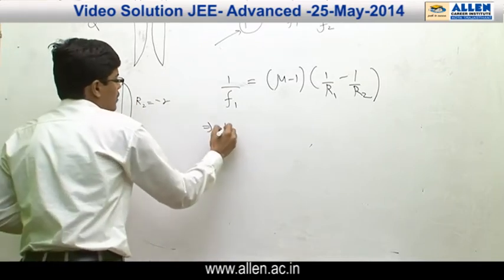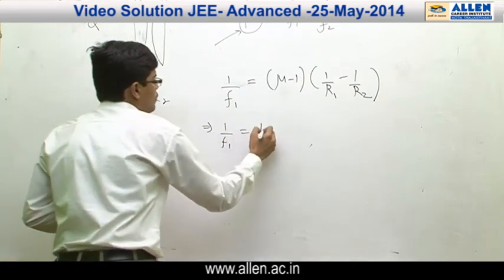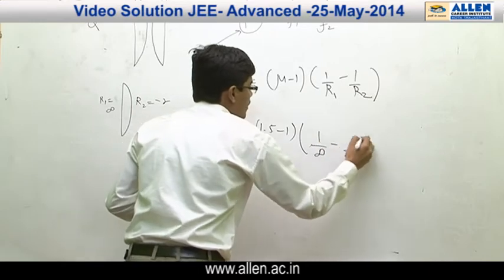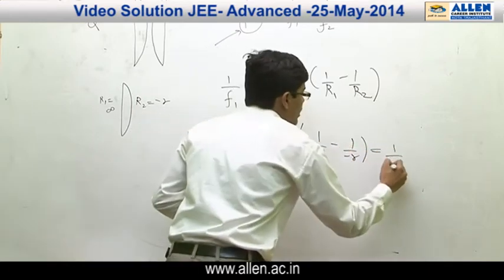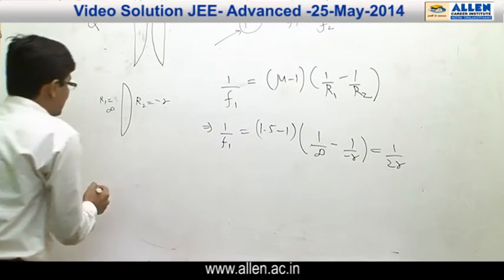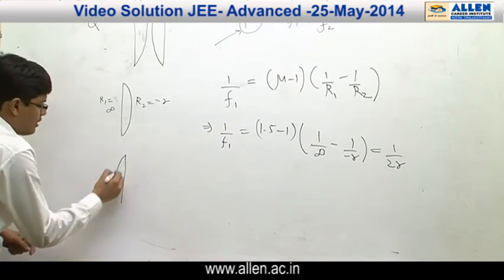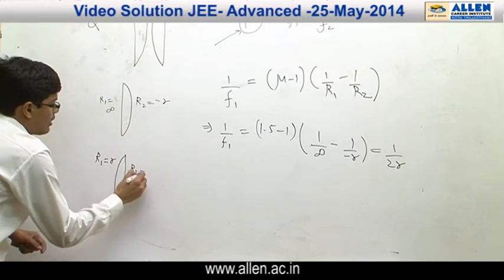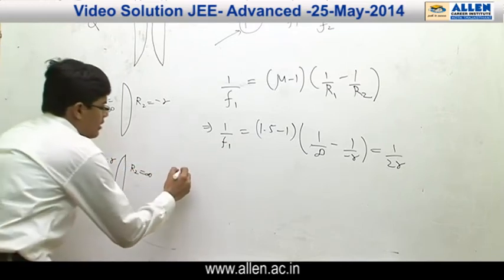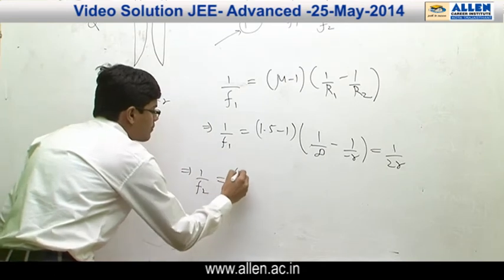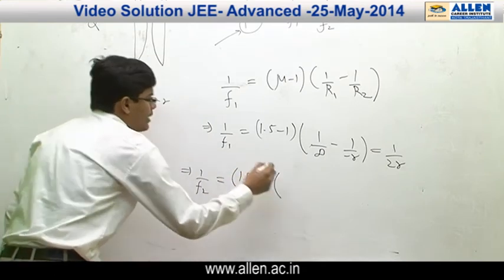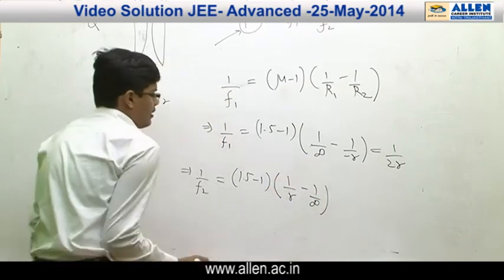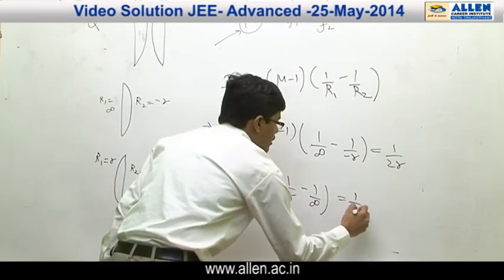Putting the values: 1/F1 = (1.5 − 1)(1/∞ − 1/(−R)) = (0.5)(1/R) = 1/(2R). Similarly, for the second lens, R1 = R and R2 = ∞. That implies 1/F2 = 1/(2R).